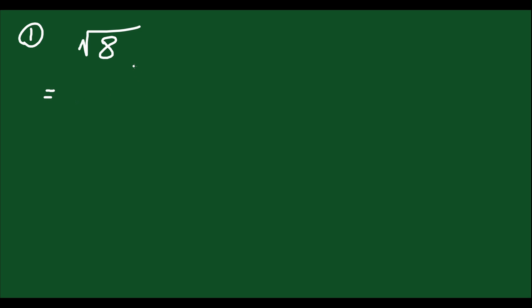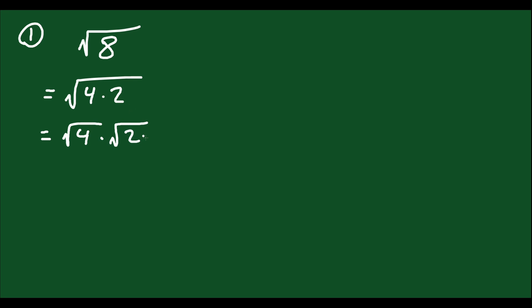With that in mind, let's try to simplify some radicals. Question 1: if I have the square root of 8, how can I simplify this? What you want to do is split up that 8 into two different numbers multiplied together, where one of them you can actually take the square root of. If you think of the factors of 8, one obvious pairing is 4 times 2. Because you can take the square root of 4, you can write the square root of 4 times 2 as the square root of 4 times the square root of 2. Square root of 4 is 2, so you get 2√2.